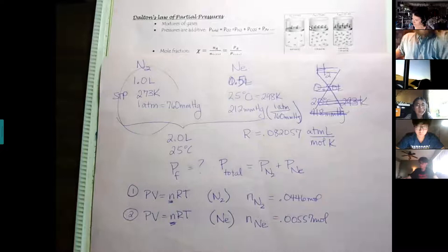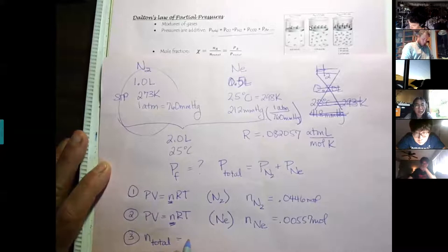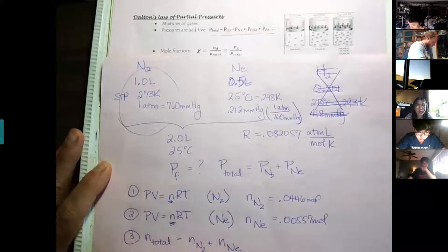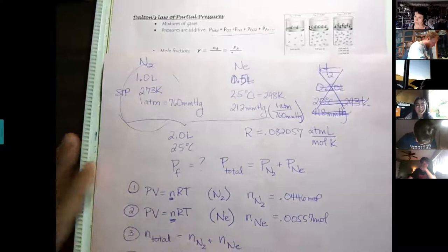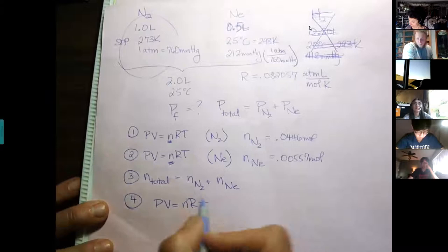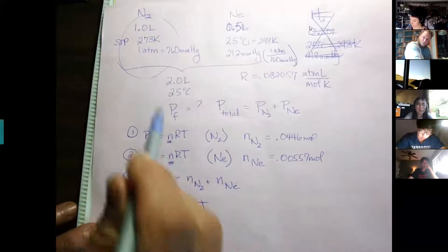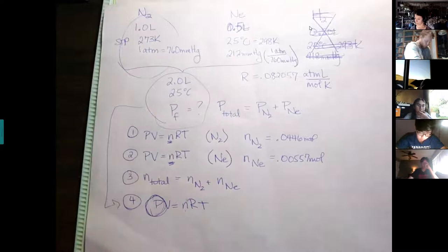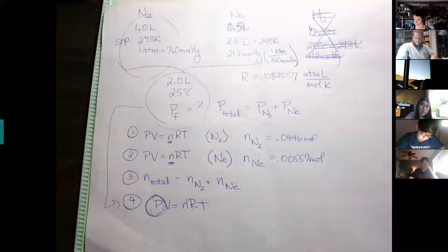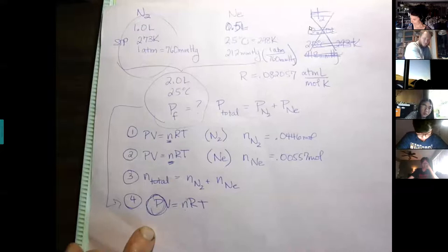When you show your work, state your formulas. The third step is N total equals moles of nitrogen plus moles of neon. Then the fourth and final step is PV = NRT again — this time you know N and you solve for pressure, using the final values: 2 liters and 298 Kelvin.